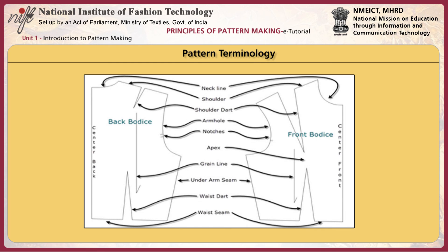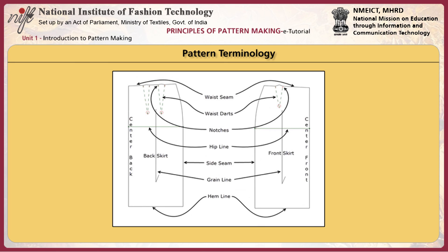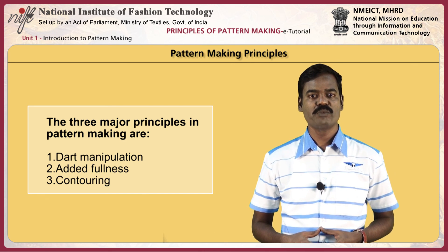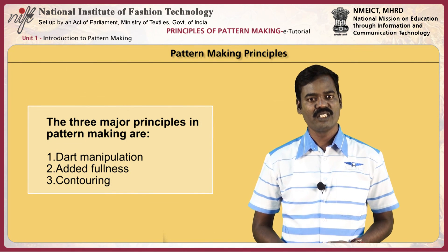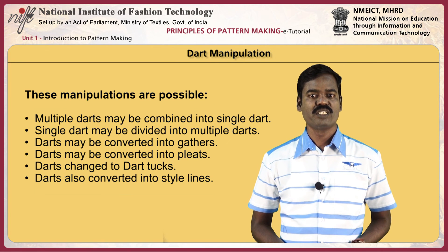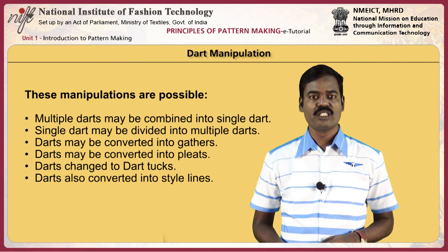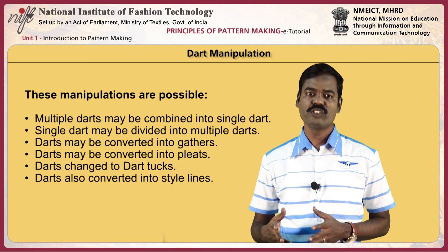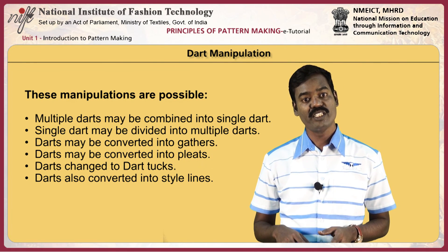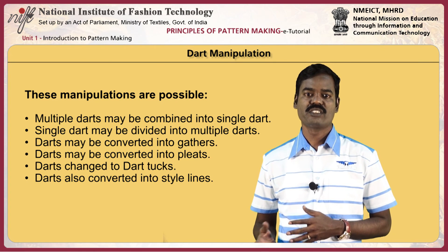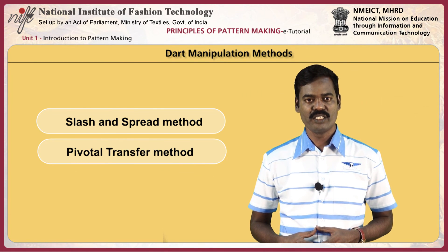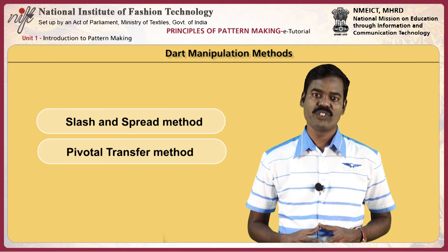Let us now review the frequently used terms for bodies, skirts, and sleeves. The three major principles in pattern making are dart manipulation, added fullness, and contouring principles. Various dart manipulations are possible: multiple darts may be combined into a single dart, a single dart may be divided into multiple darts, a dart may be converted into gathers or pleats, darts may be changed into dart tucks, and darts may also be converted into style lines. There are two methods of manipulating darts: the slash and spread method and the pivotal transfer method.